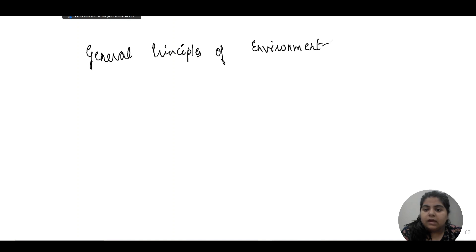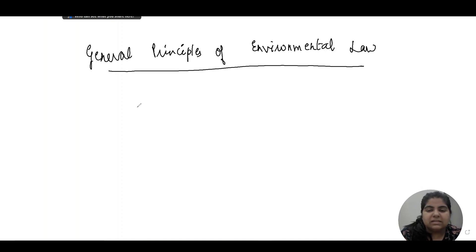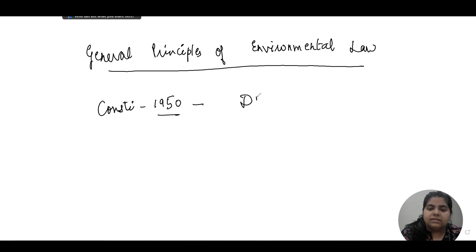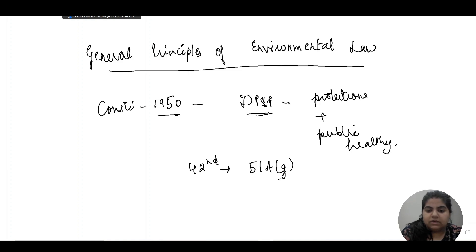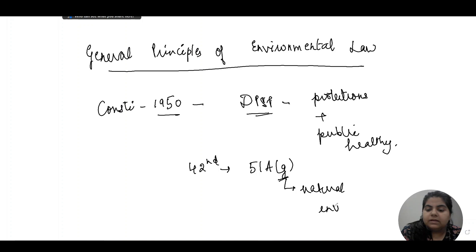As we have discussed in other lectures, environment law is not a basic Indian concept. In India, the first legislation enacted after freedom was the Constitution in 1950. That provision had only DPSP which related to protection of animal husbandry, wildlife, and public health.